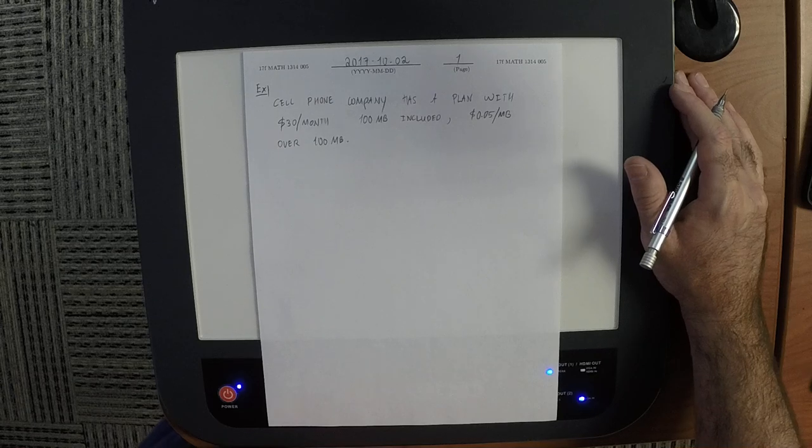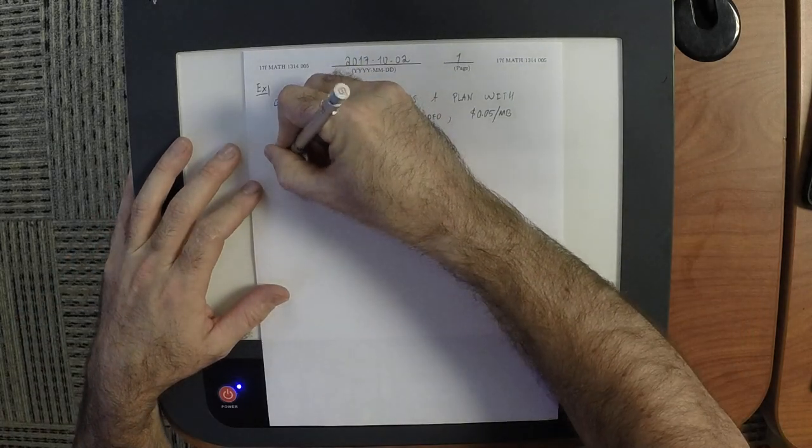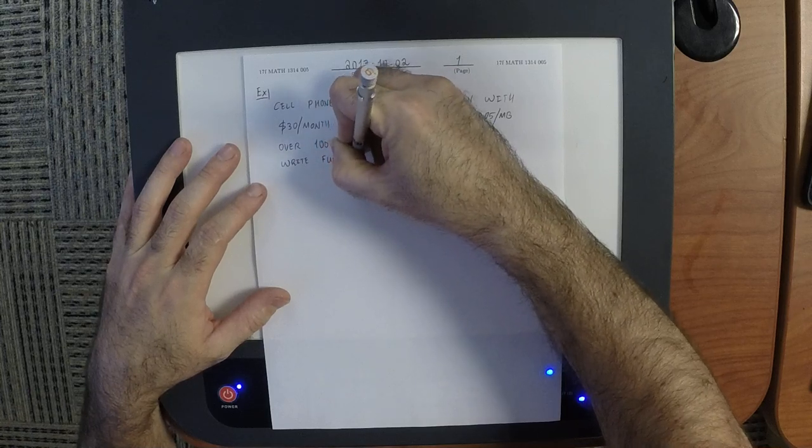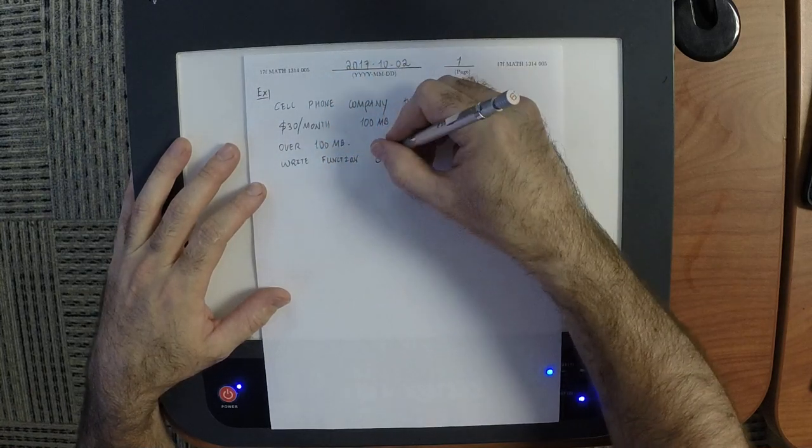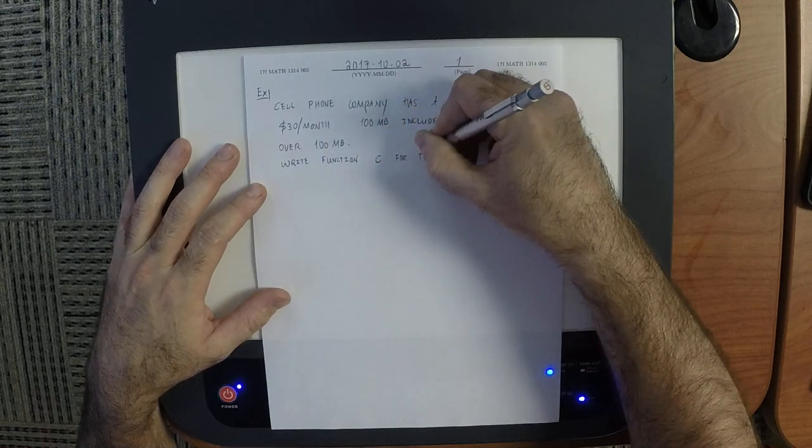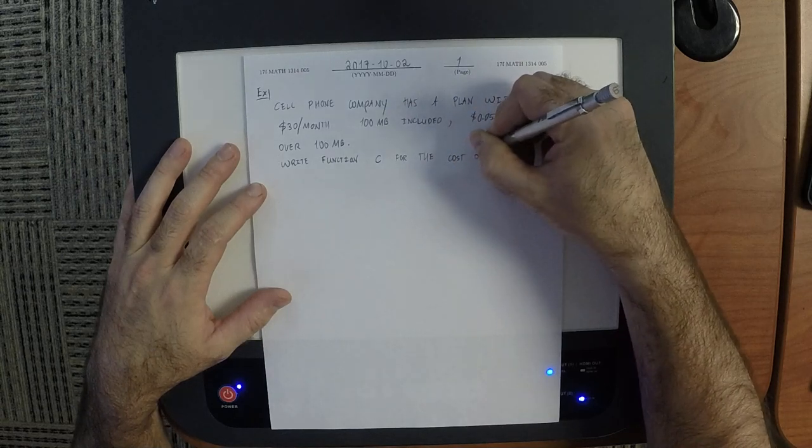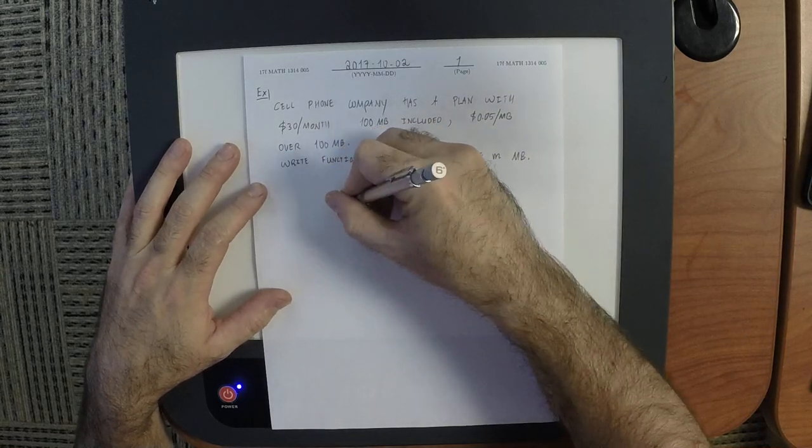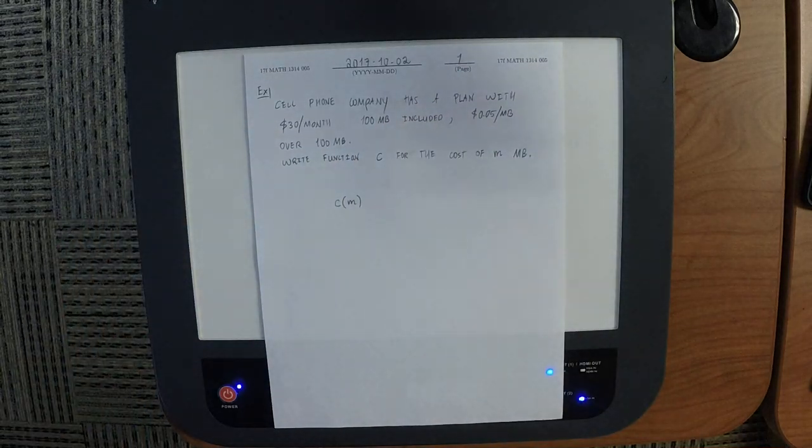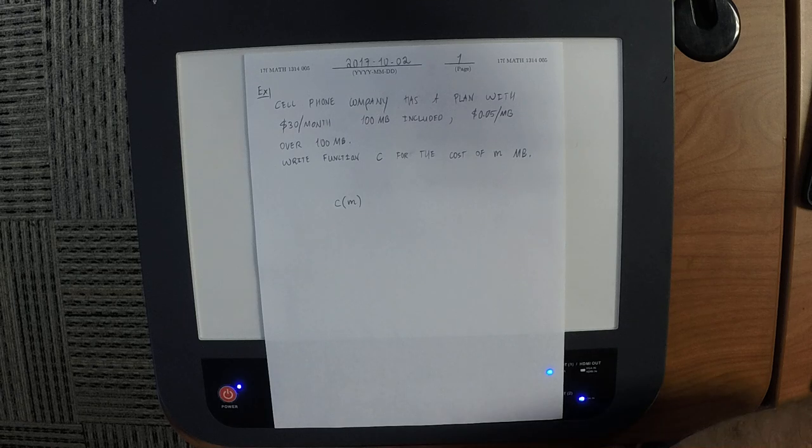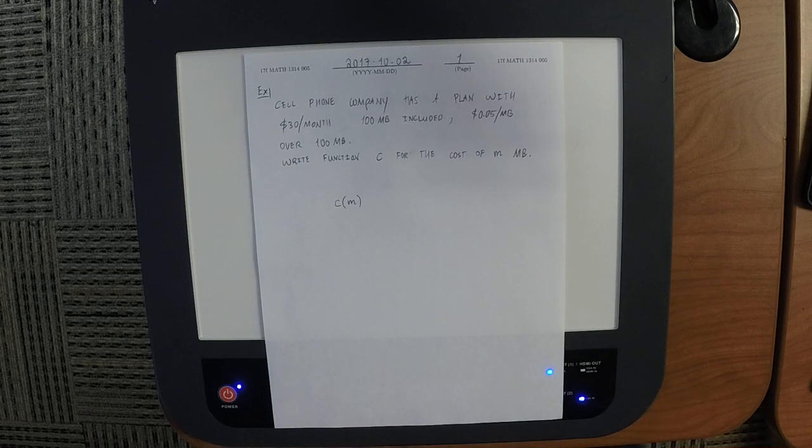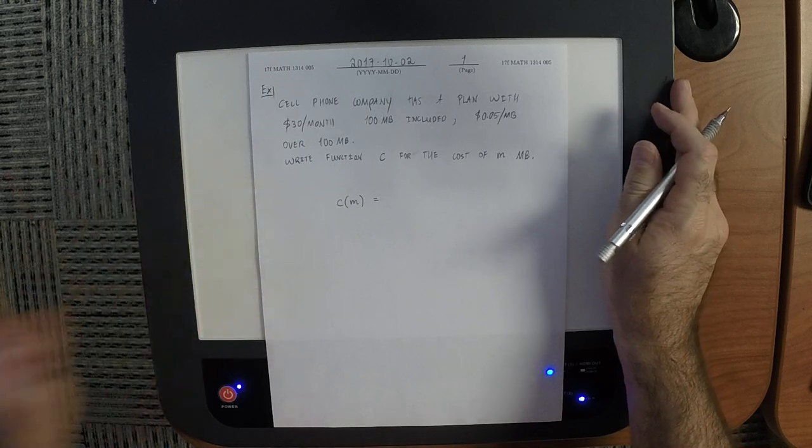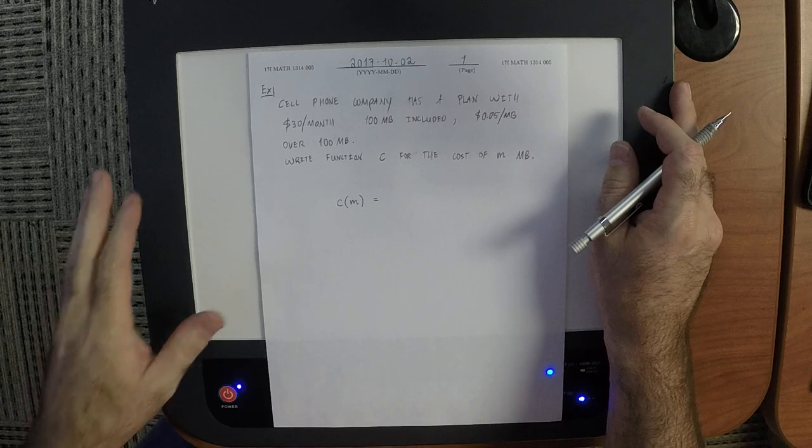Okay, so what we want to do is we want to write a function that does this. So write a function C for the cost of M megabytes. So I want a function that looks like C of M. Okay, so this function it sort of changes its mind depending on how many megabytes you have, right?